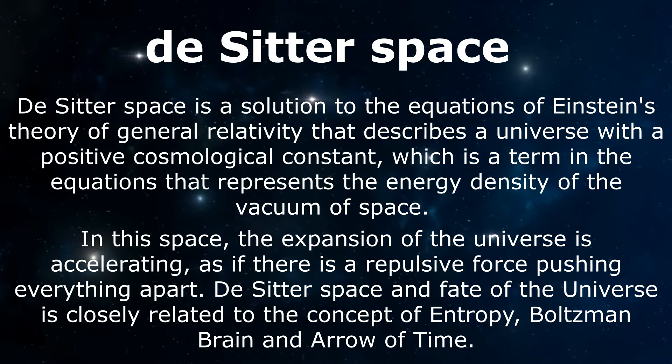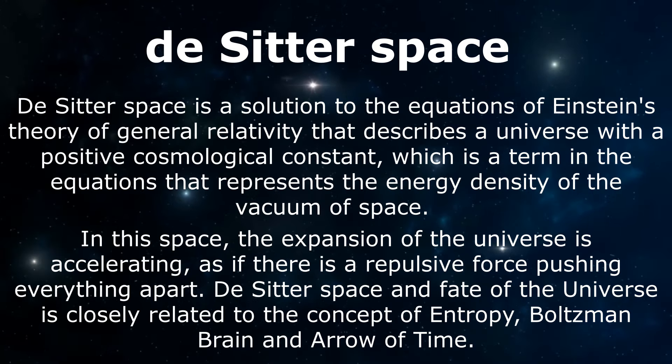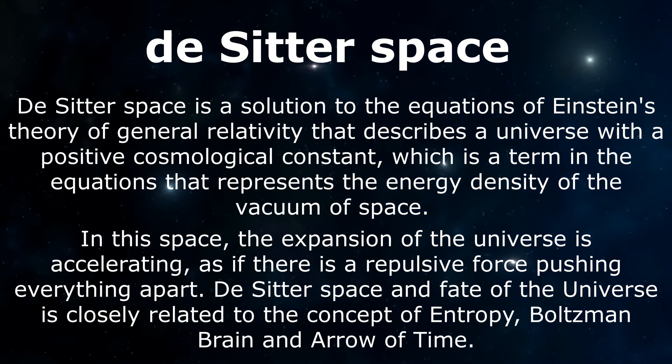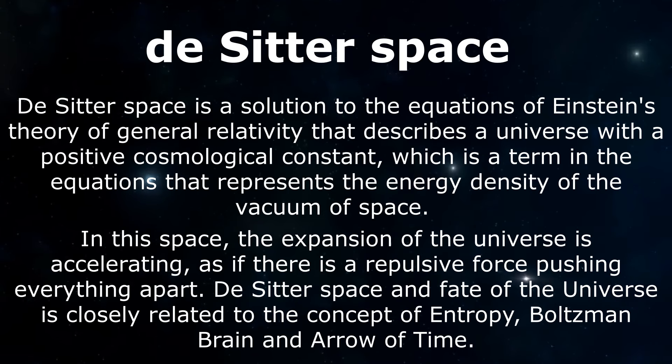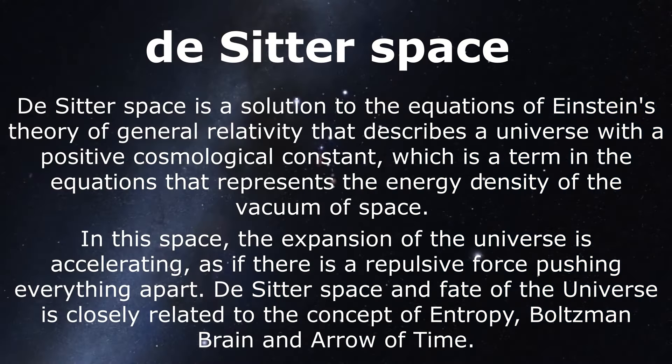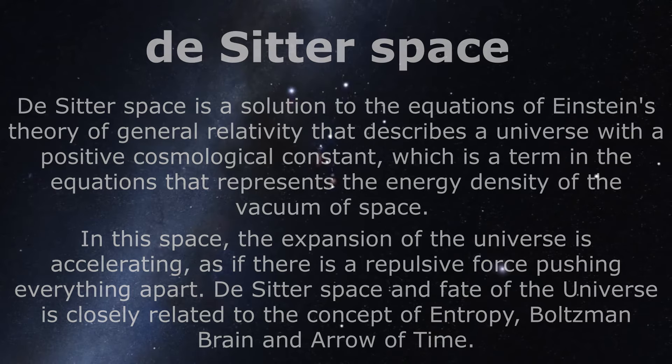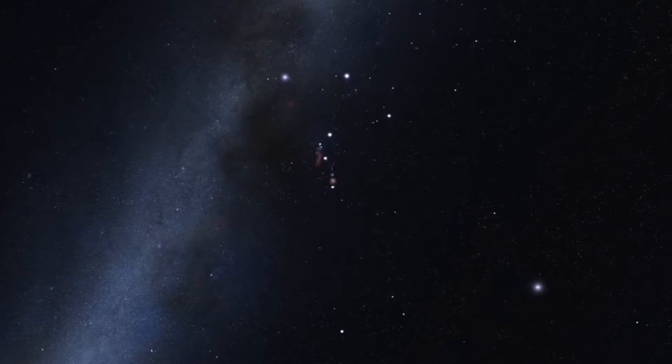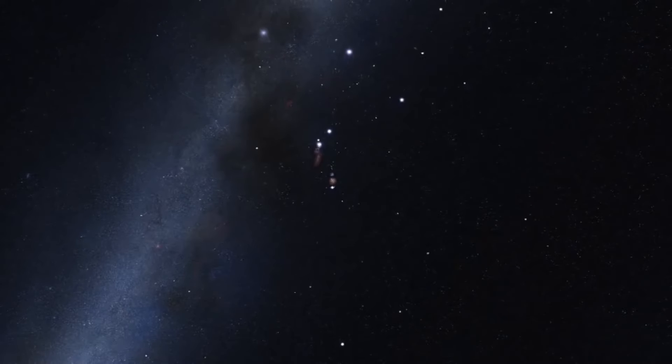De Sitter universe is a desolate, barren, cold, infinite void. And it is characterized by its high degree of symmetry and is homogeneous and isotropic, meaning that it looks the same in all directions and at all locations in space. And it is also a maximally symmetric space. Its geometry is completely determined by its curvature.